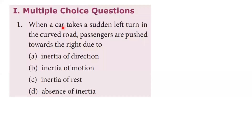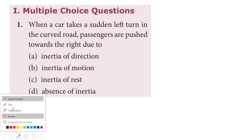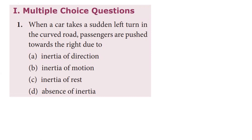In the third unit, laws of motion topic, we have multiple choice questions. First question: when a car takes a sudden left turn on the road, passengers are pushed towards the right. In laws of motion, there are three types of inertia: inertia of rest, inertia of motion, and inertia of direction. In this case, the direction changes and the person has inability to change direction — that is inertia of direction.